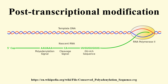This type of cap, with just this modification, is called a cap-0 structure. The ribose of the adjacent nucleotide may also be methylated to give a cap-1. Methylation of nucleotides downstream of the RNA molecule produce cap-2, cap-3 structures, and so on. In these cases, the methyl groups are added to the 2'-O groups of the ribose sugar. The cap protects the 5' end of the primary RNA transcript from attack by ribonucleases that have specificity to the 3'-5' phosphodiester bonds.